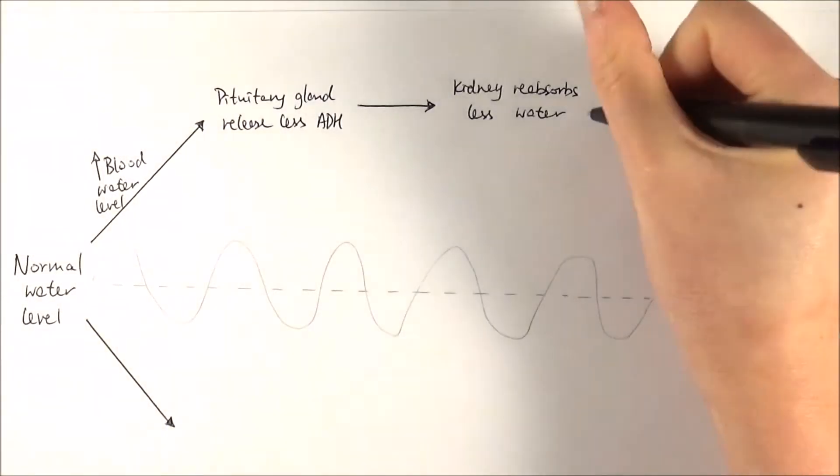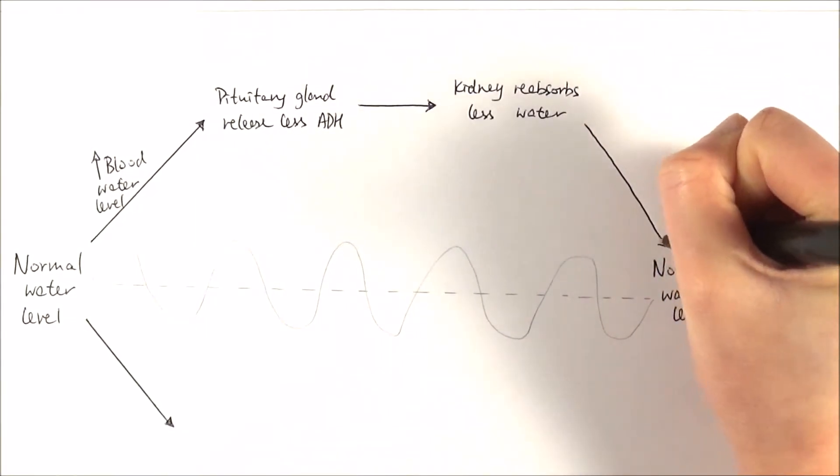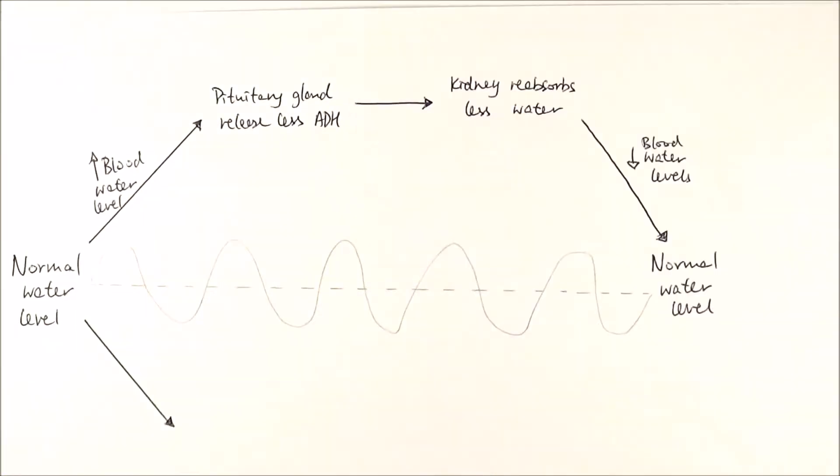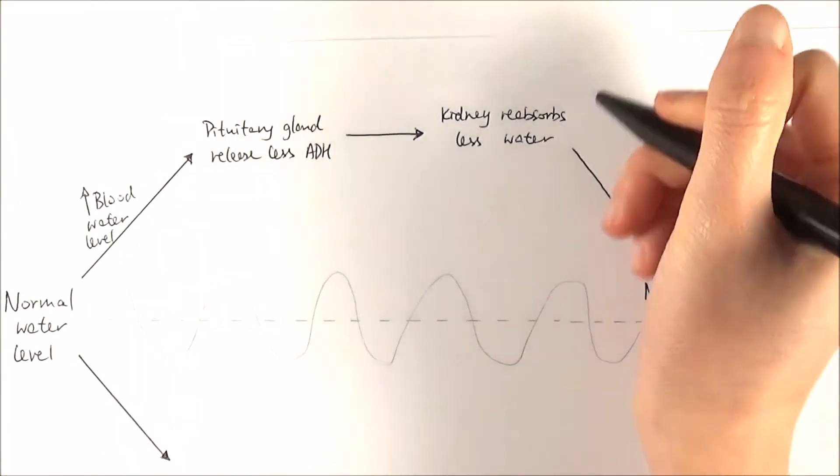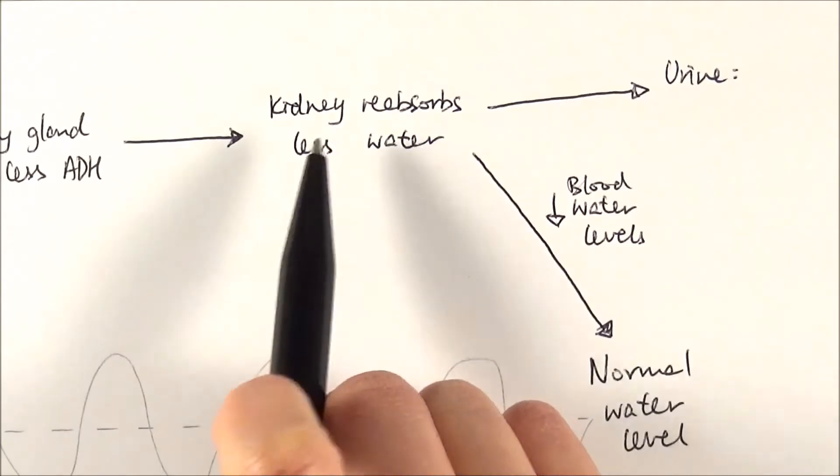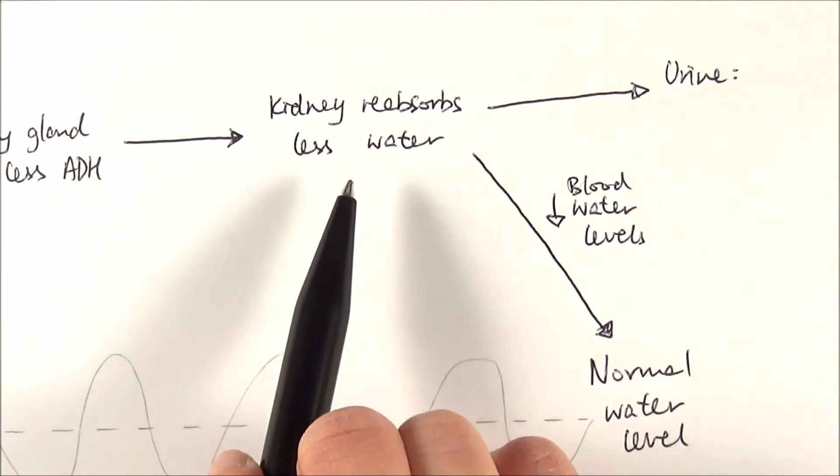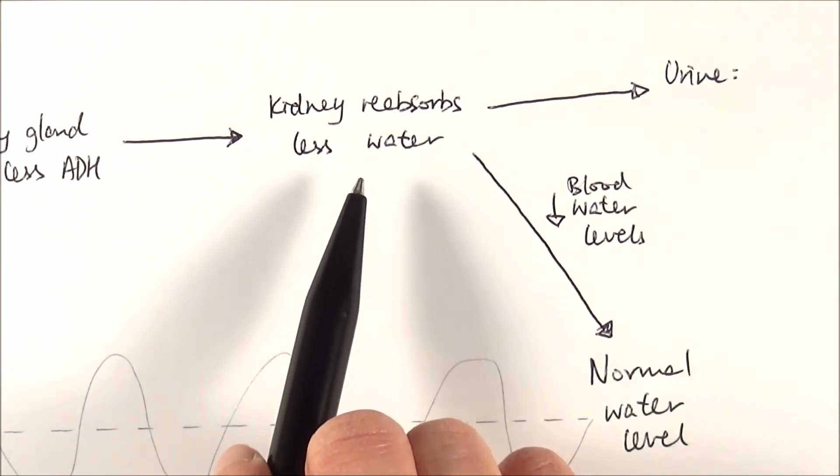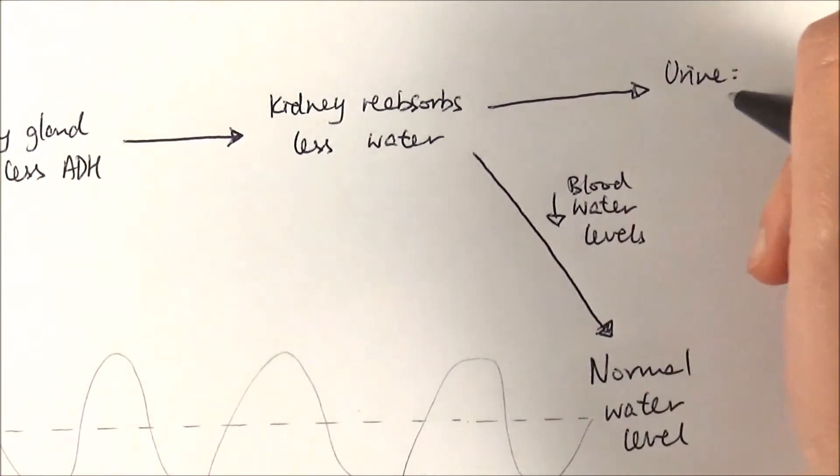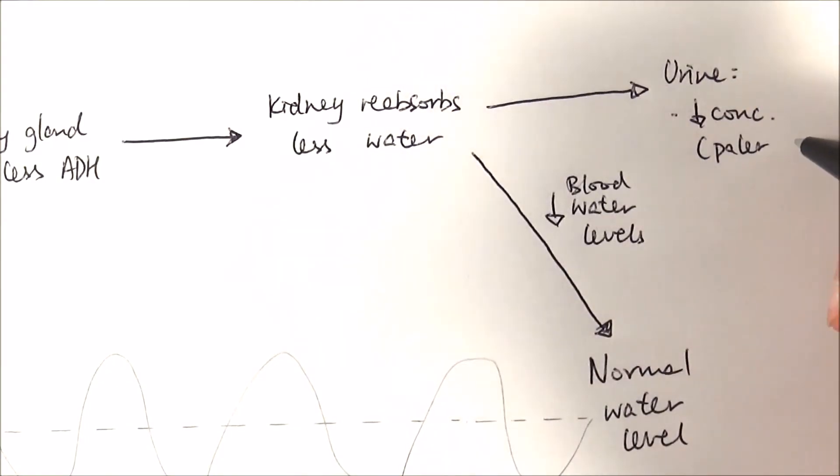And therefore, because it's reabsorbing less of the water back into the blood, the blood water levels will decrease. And in this process we also make urine. Think about what the urine will be like. Because less water is being reabsorbed back into the body, more water stays in the filtrate to become urine. Because there's more water, that means it is less concentrated. And if it's less concentrated, that means there will be a paler color of the urine that you excrete.